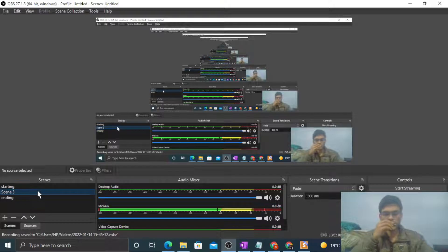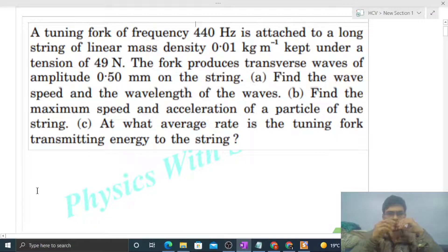Hi everyone, today let's discuss an interesting problem. A tuning fork of frequency 440 Hz is attached to a long string of linear mass density 0.01 kg/m kept under a tension of 49 N. The fork produces transverse waves of amplitude 0.50 mm on the string. Find the wave speed and the wavelength of the waves.